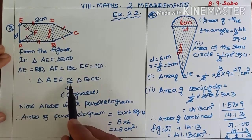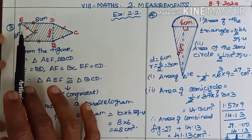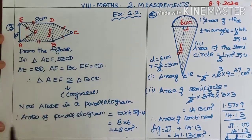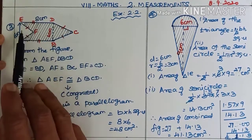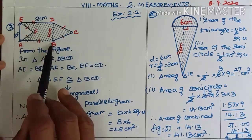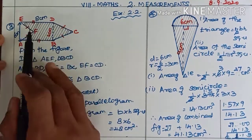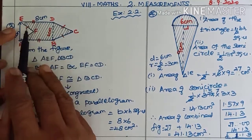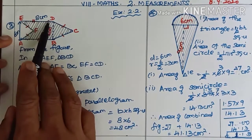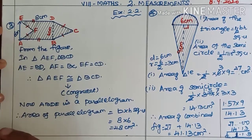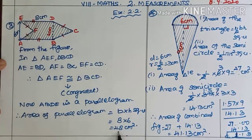Since all three sides are equal, the two triangles are said to be congruent. Congruent means the triangles are equal. ABDE is a parallelogram, so ABED or DE is a parallelogram. The area: base is 8 cm, height is 6 cm, therefore B × H = 8 × 6 = 48 cm squared. The shaded region is 48 cm squared.